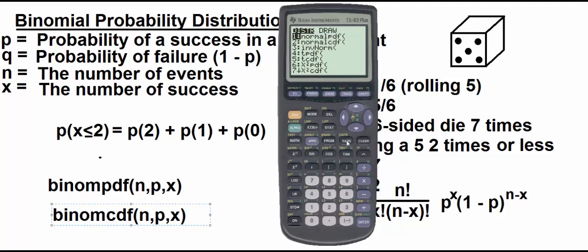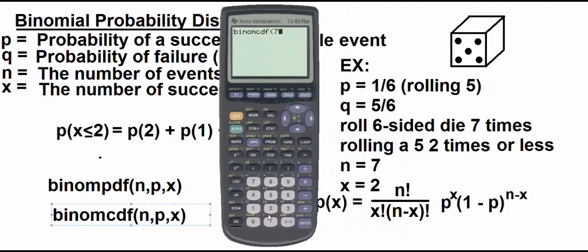So let's go ahead and do that now. We're going to go back to binomcdf. So the C stands for cumulative. So this would be our example over here. Seven comma one-sixth comma two. So the likelihood of rolling exactly two or exactly one or exactly zero. The probability of rolling two or less would be about ninety percent. Most of the time you roll the dice seven times, you're going to get five two or less times.